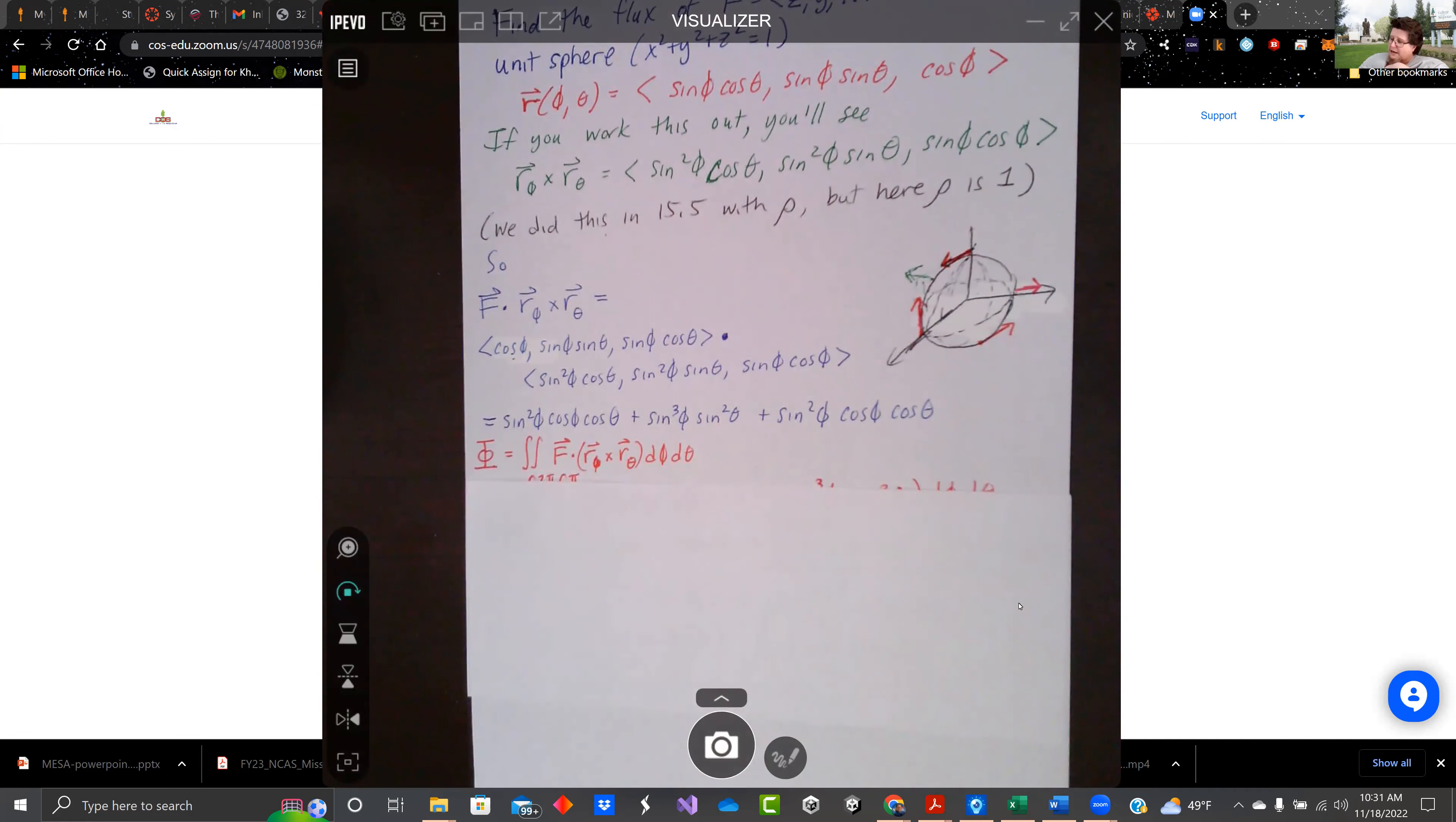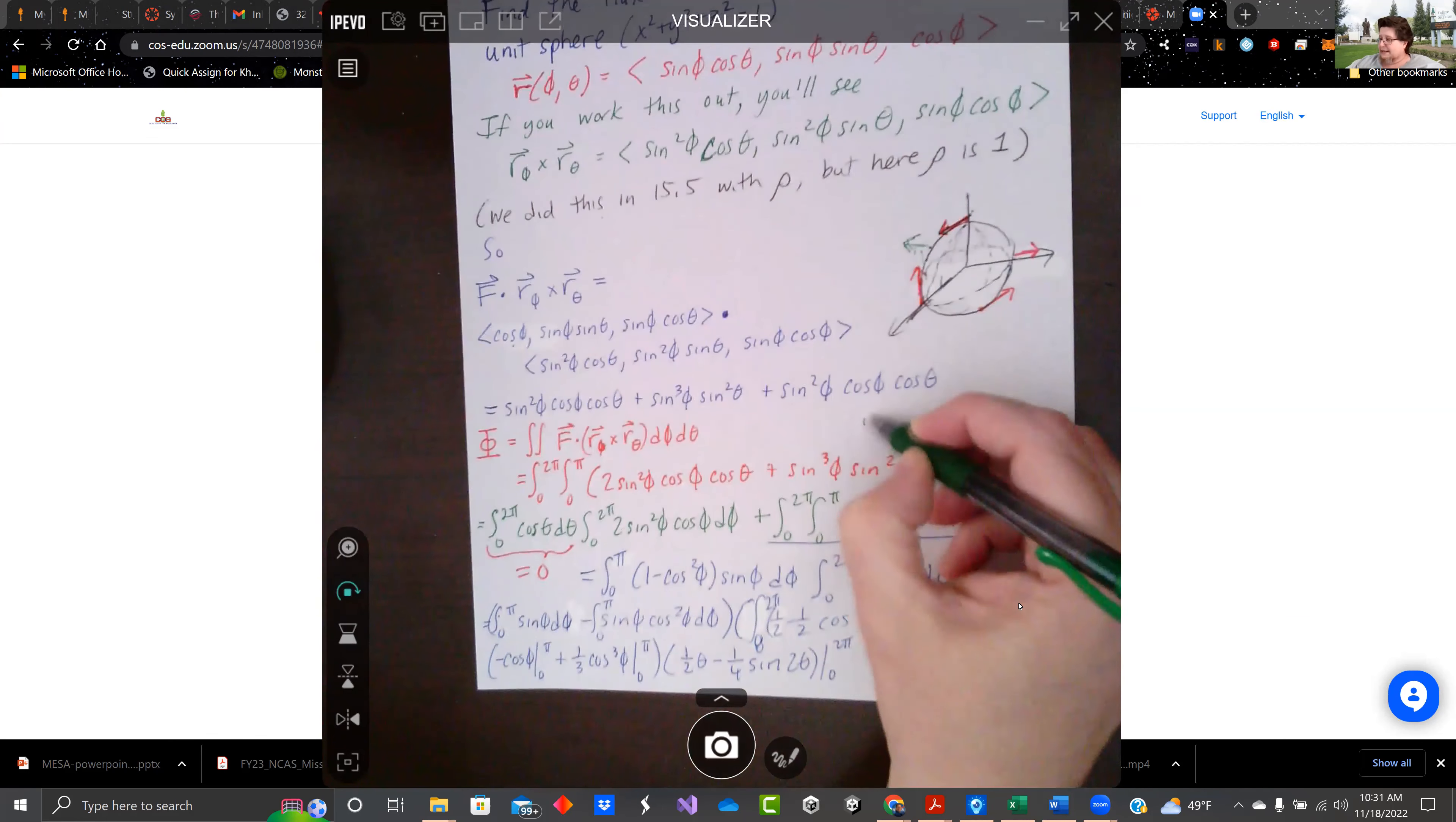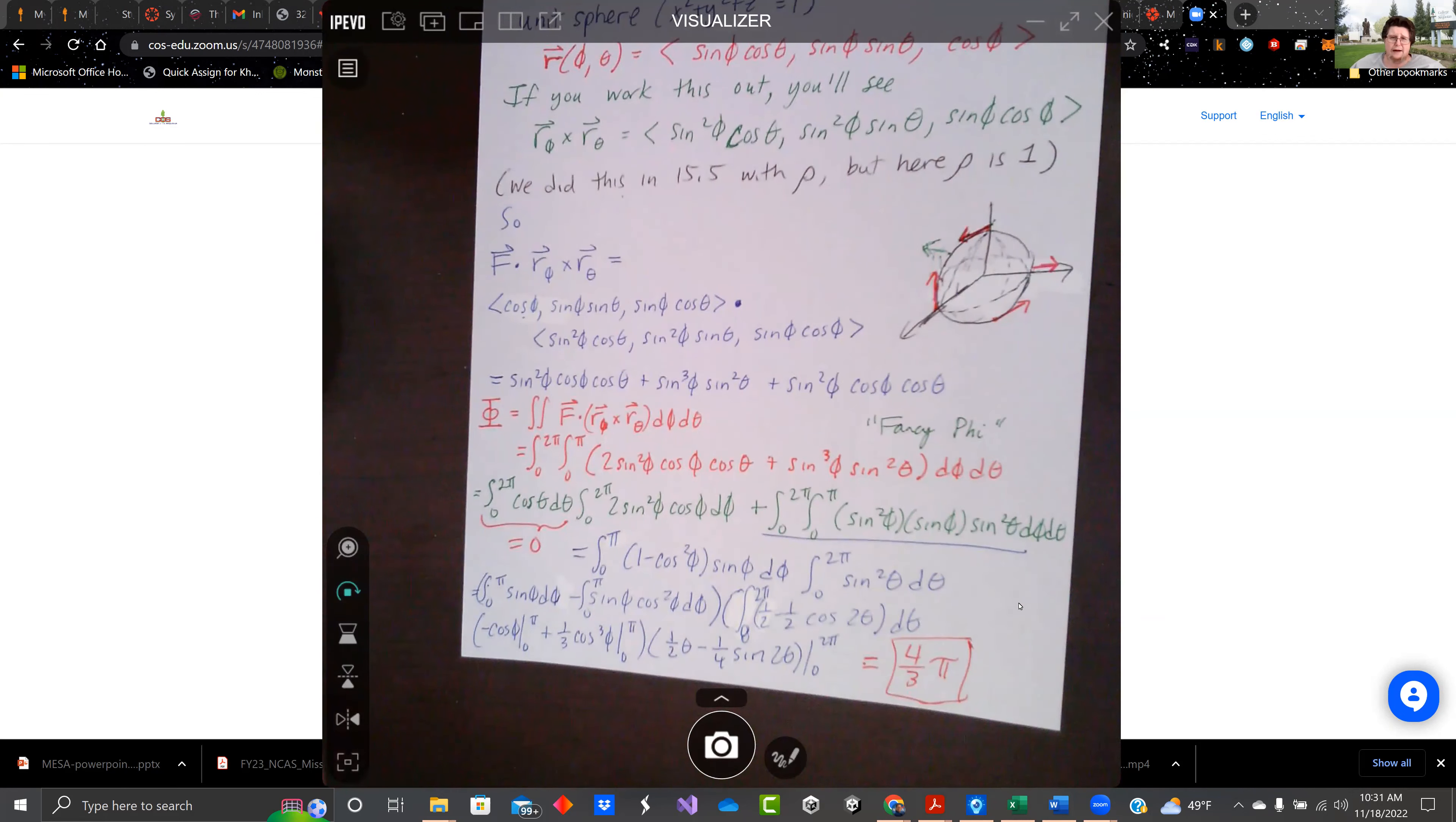And so now we want to integrate that with respect to d phi and d theta. So if we chug along through it. So this is a fancy phi, capital phi. That's the symbol they use for flux.